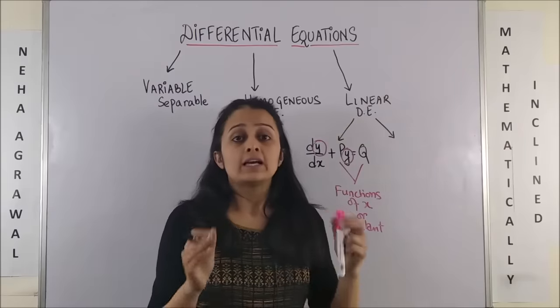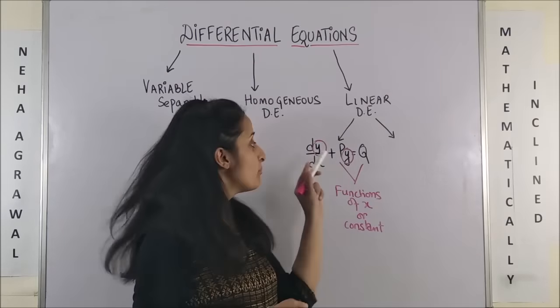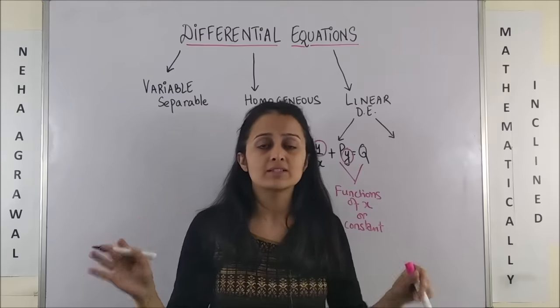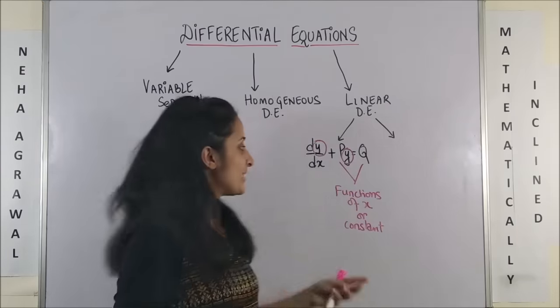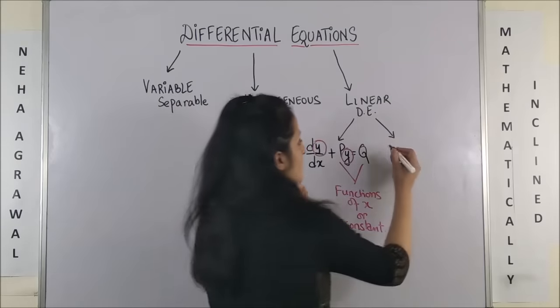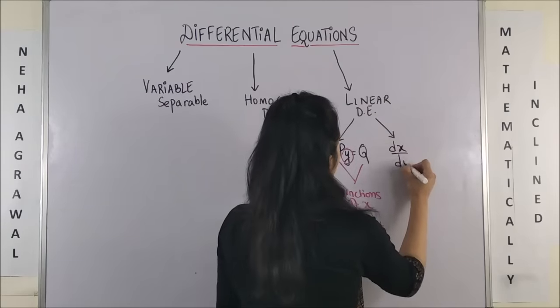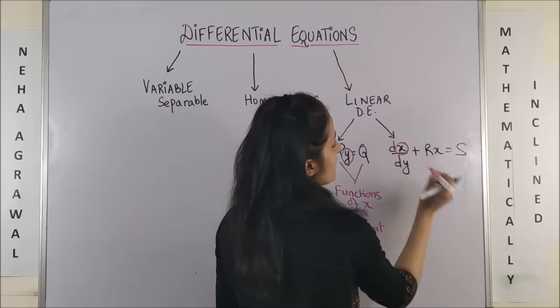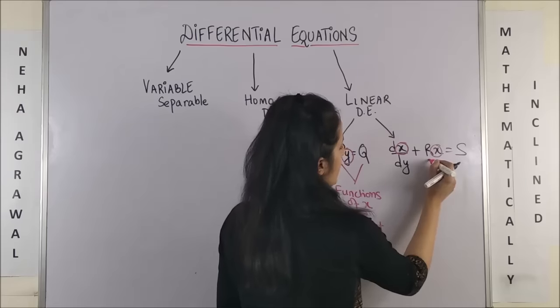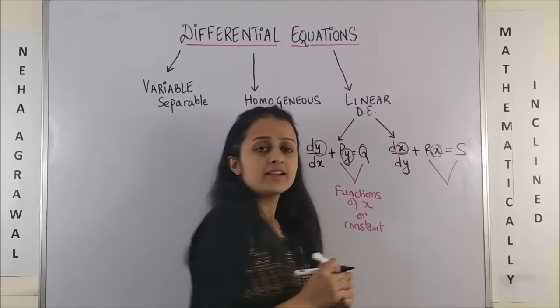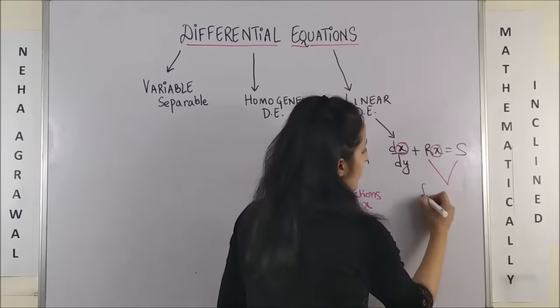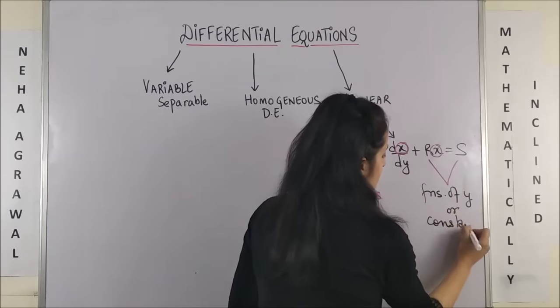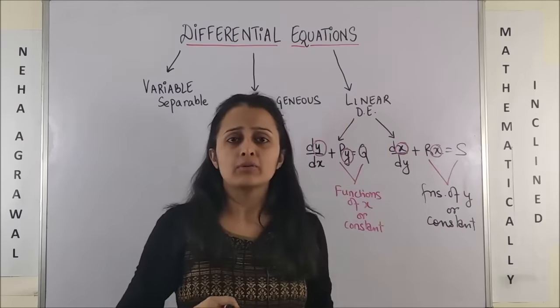It is not that both p and q are functions of x or both of them are constants. They could be one of each also. If this is not, then it is the second form where it's dx by dy here. And r and s this time are functions of y or constant terms. This is the background.